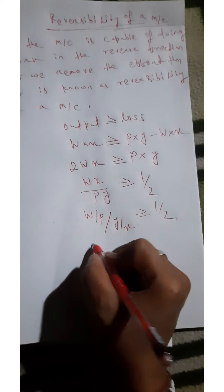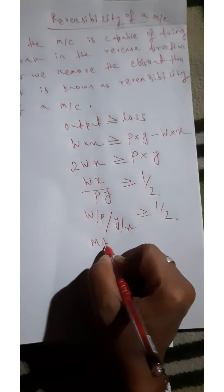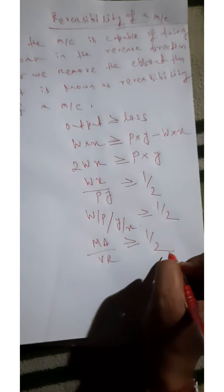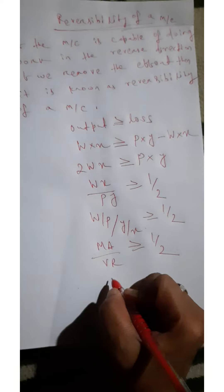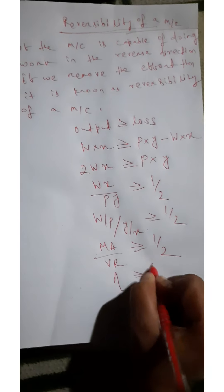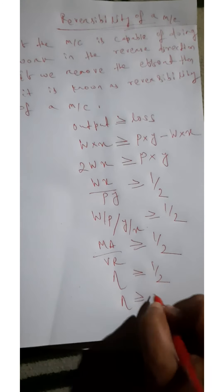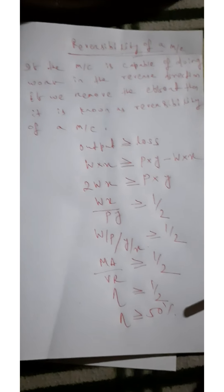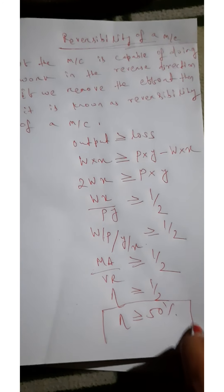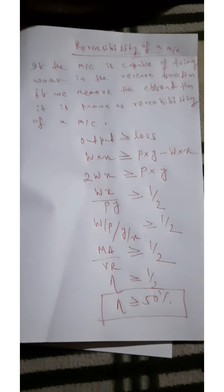W/P is the mechanical advantage and Y/X is the velocity ratio. So mechanical advantage divided by velocity ratio is the efficiency. Therefore, efficiency ≥ 1/2, meaning efficiency ≥ 50%. For a machine to be reversible, its efficiency must be greater than or equal to 50%.